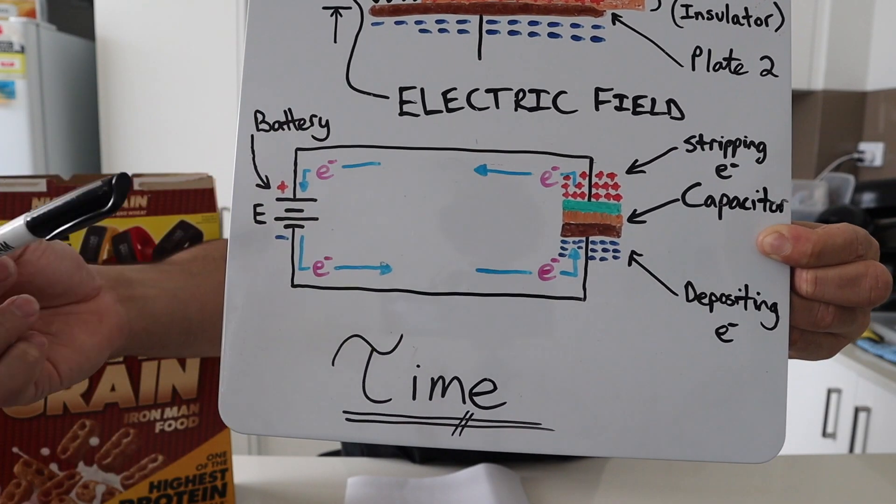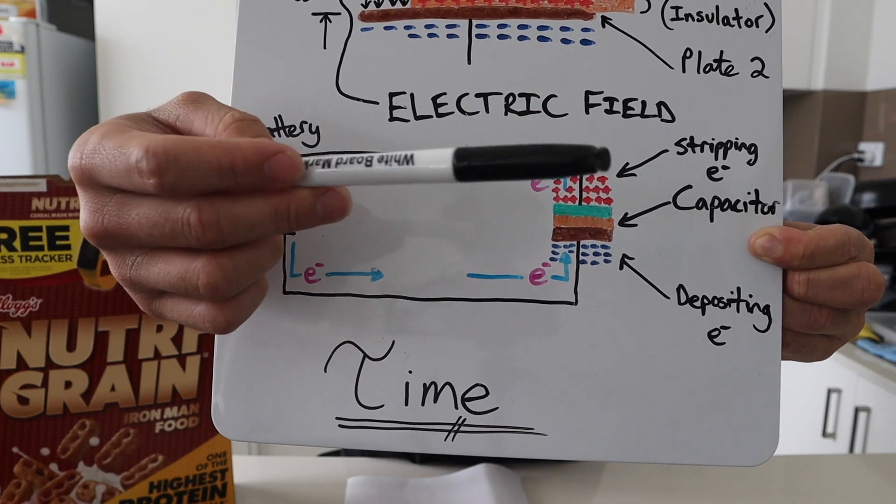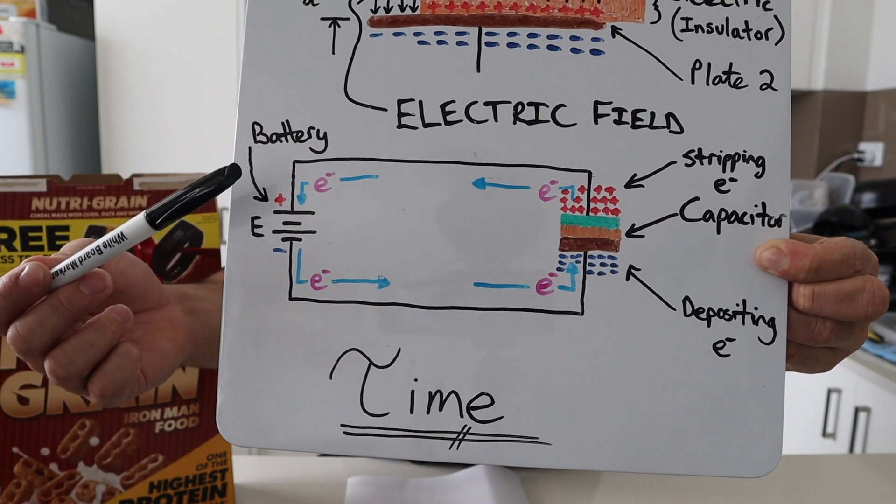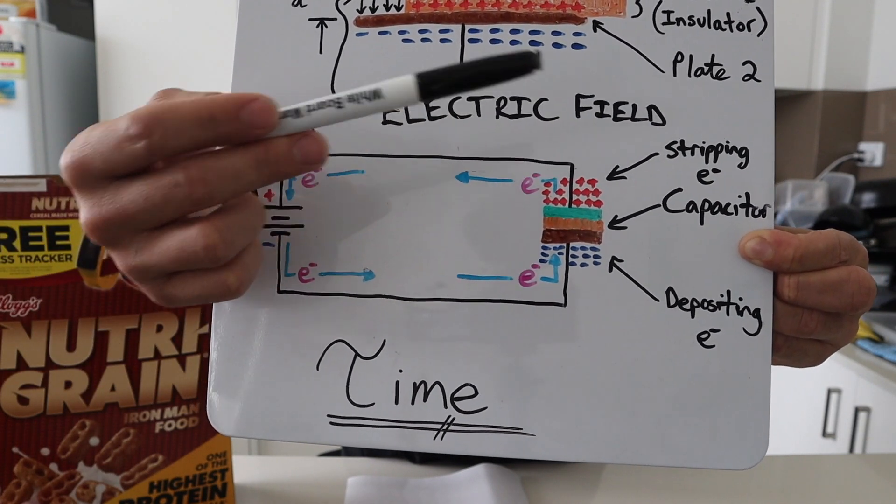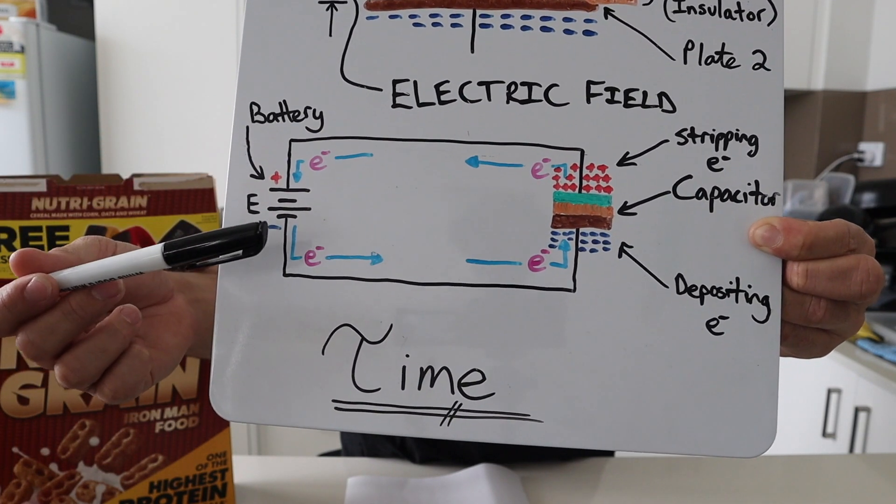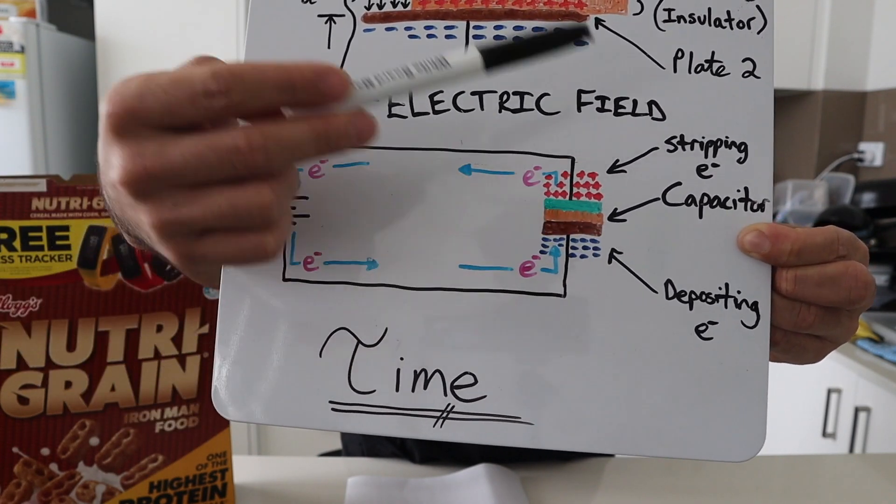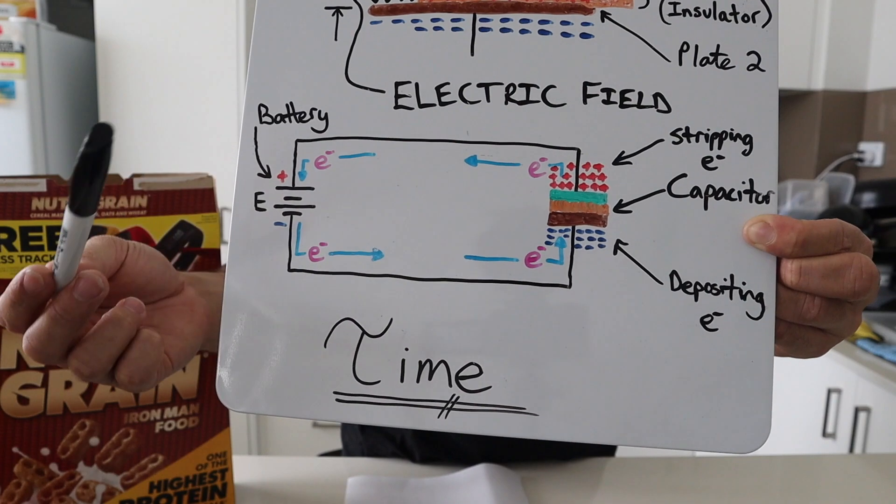So when a capacitor is put in series with a battery connected, the electrons are stripped from the green plate on top and carried to the positive side of the battery terminal. This creates a positive charge on the top plate, and electrons pass from the negative terminal to the bottom plate. And over time, this stripping, depositing of electrons between the two plates, charge the capacitor.